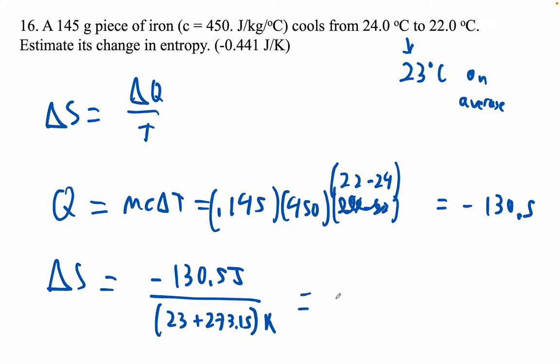I'm getting that that is negative 0.44065. And the units here are joules per Kelvin. I guess you'd say 441 with three sig figs.